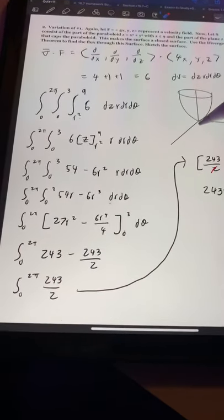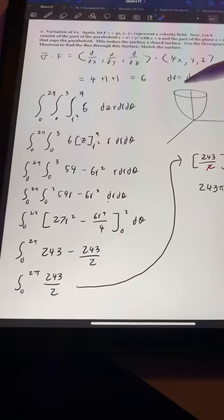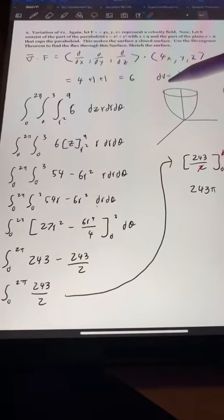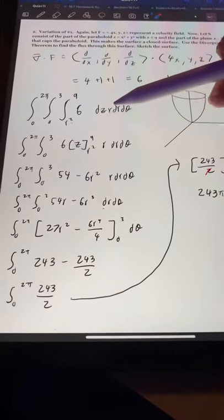which is r squared, and it goes all the way up to 9. And we're integrating 6 dz r dr dθ.